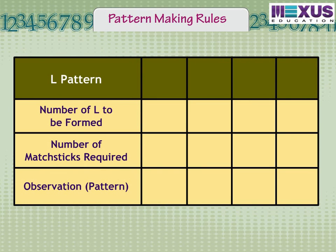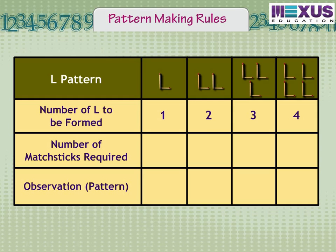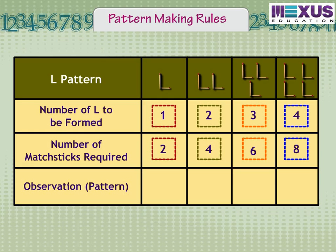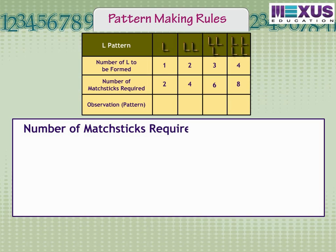Let's continue forming the patterns with one L, two Ls, three Ls, and four Ls with the help of matchsticks. Let's note down the number of matchsticks used in each row to make the L pattern. Can you see the relationship between the number of Ls and number of matchsticks used? The number of matchsticks required is twice the number of Ls formed — equal to two times the number of Ls.